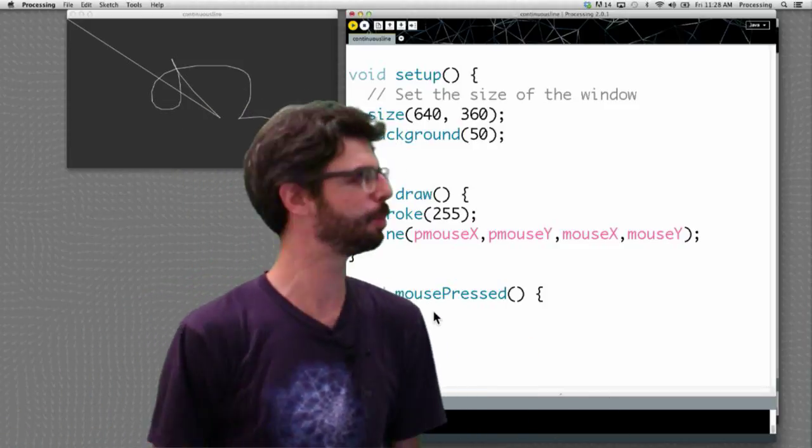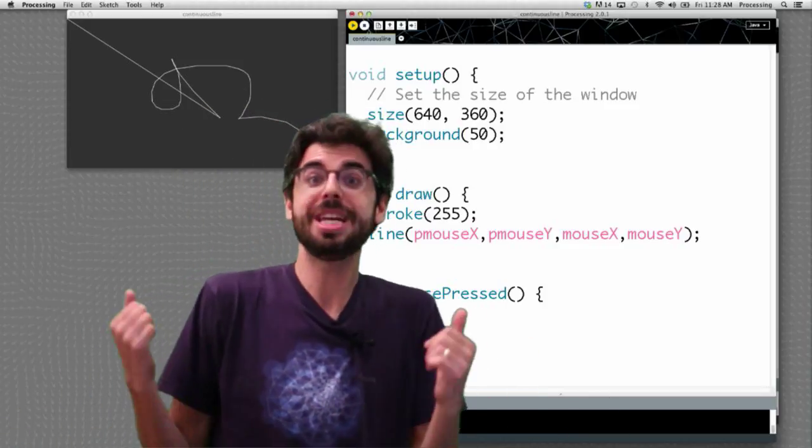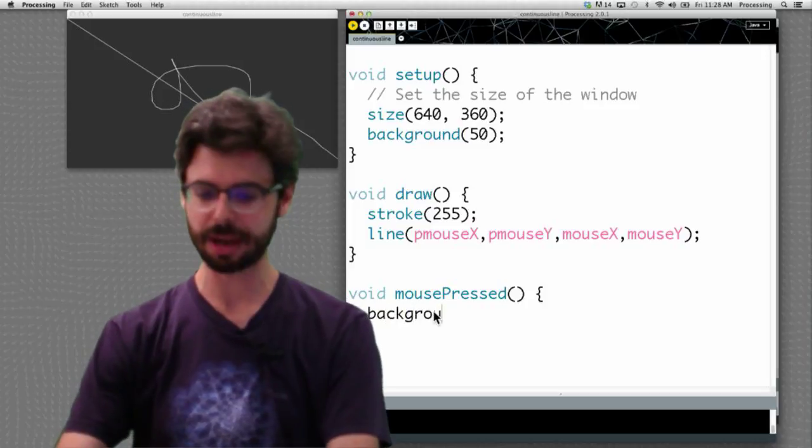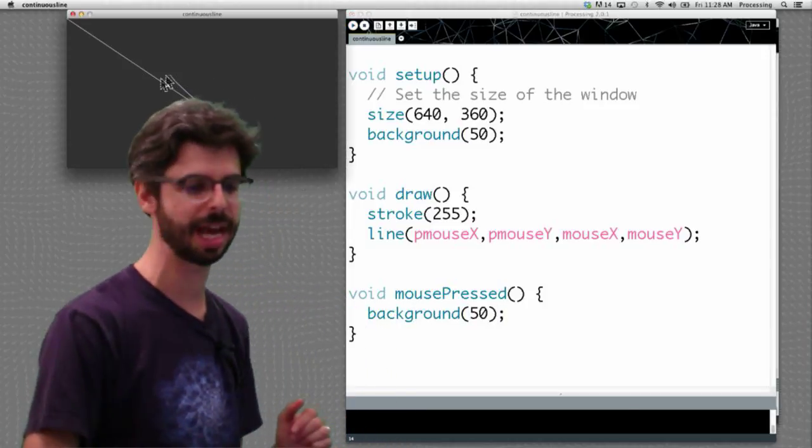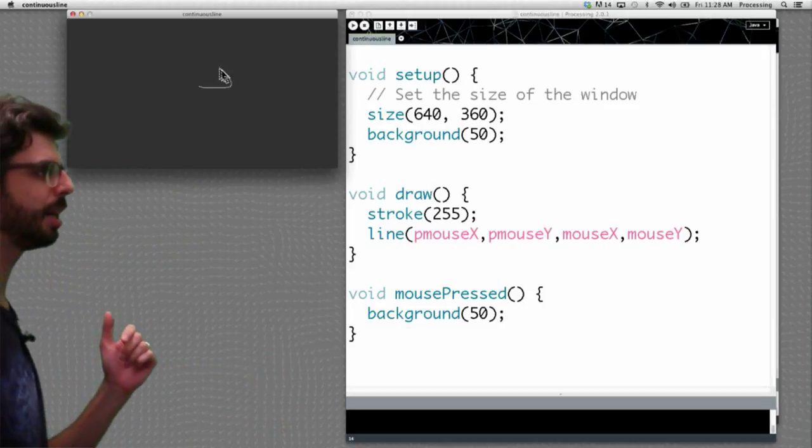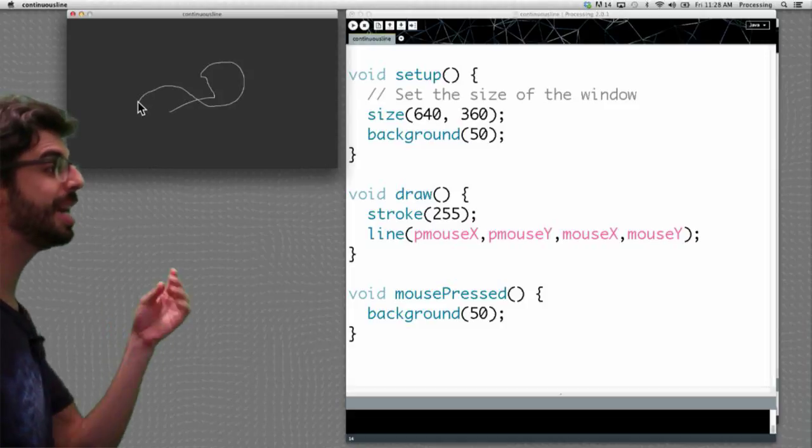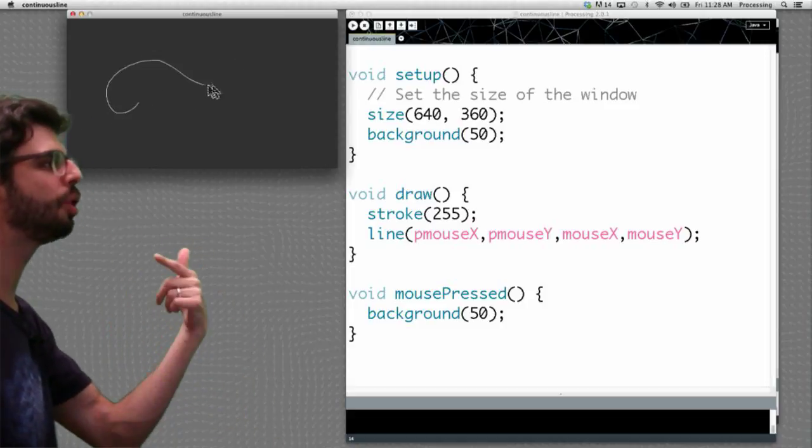What's something I could put inside mouse pressed? I don't know, why don't we erase the background? We clear the background, set a background of grayscale value 50 again. Here, I'm moving the mouse around, every time I click it, it erases what was there before. We can see here is, boom, an event, execute that code, go back into draw.